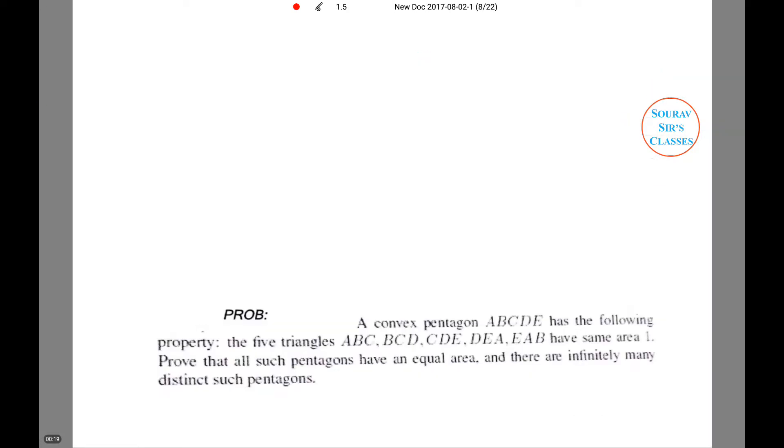The question is: a convex pentagon ABCDE has the following property: five triangles have the same area, which is 1. Prove that all such pentagons have an equal area and there are infinitely many distinct such pentagons.